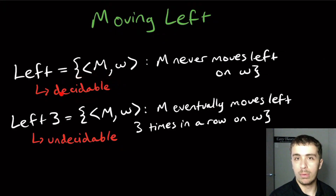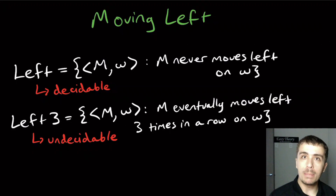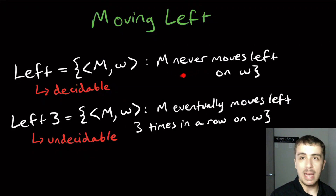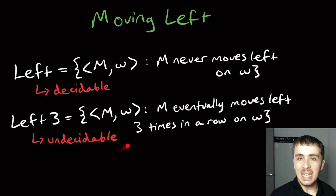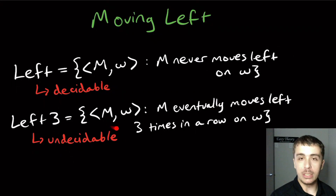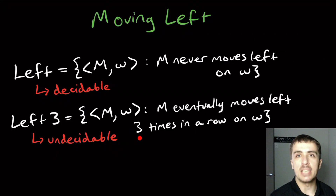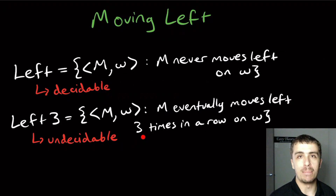There's an algorithm to figure out whether an arbitrary Turing machine on any arbitrary input will ever move left on W, and it's actually pretty fast. But it's impossible to figure out whether an arbitrary Turing machine will eventually move three times in a row to the left. Let's prove both: that LEFT is decidable and LEFT3 is undecidable.